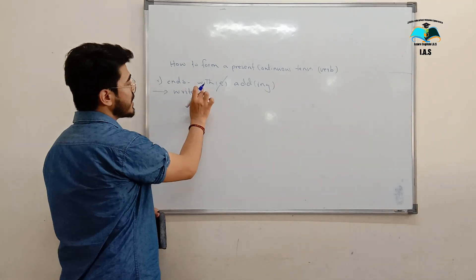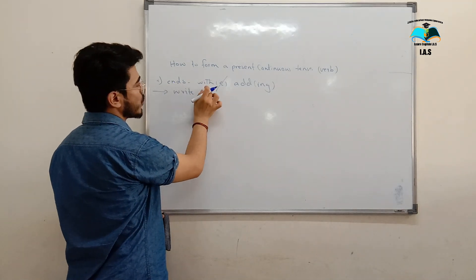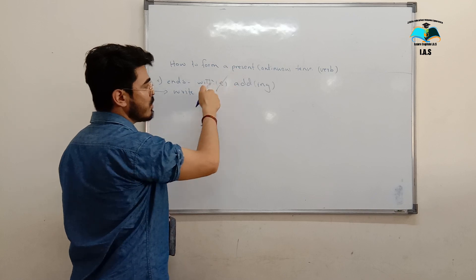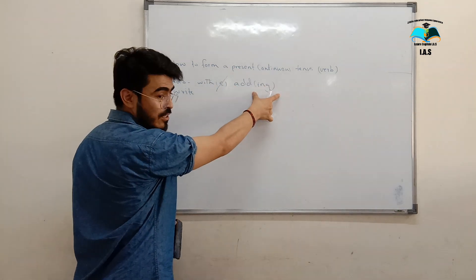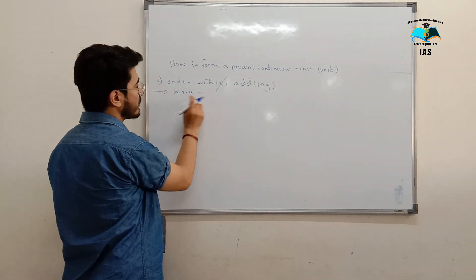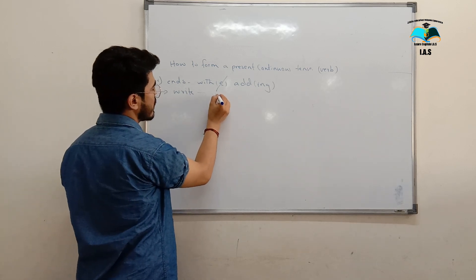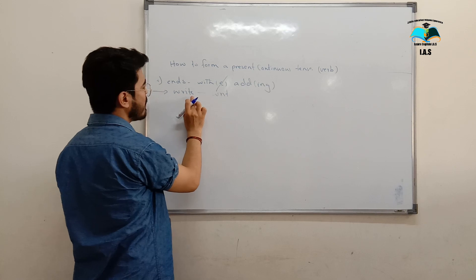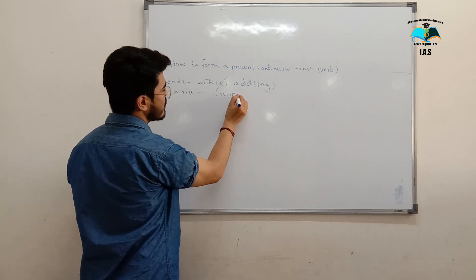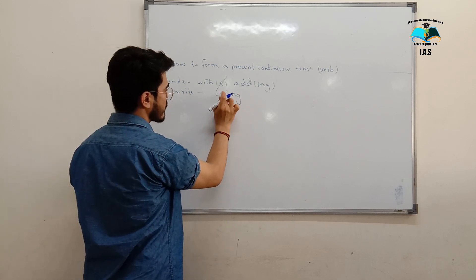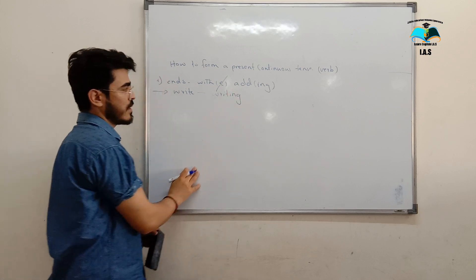Now, as I told you, if a verb ends with E, we are omitting, we are removing E, then we are adding ING. Now, if I want to add ING to 'write,' I am omitting E, then I am just adding ING. This is very simple: writing.